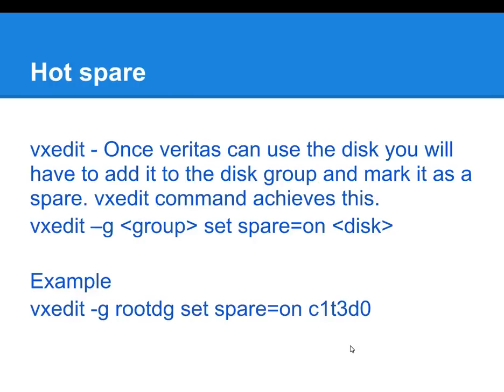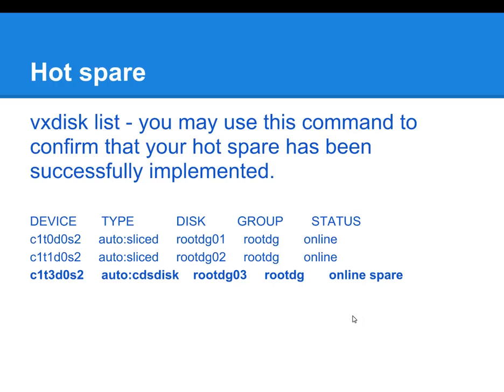The VXEdit command will help you achieve this. The syntax for that command is VXEdit -G. The group in question is rootDG. Set spare on, and then you put in the actual disk device name. In this example, it's controller one, target three, disk zero. The VXDisk list will be able to give you an output showing you that the disk has been marked as a hot spare.